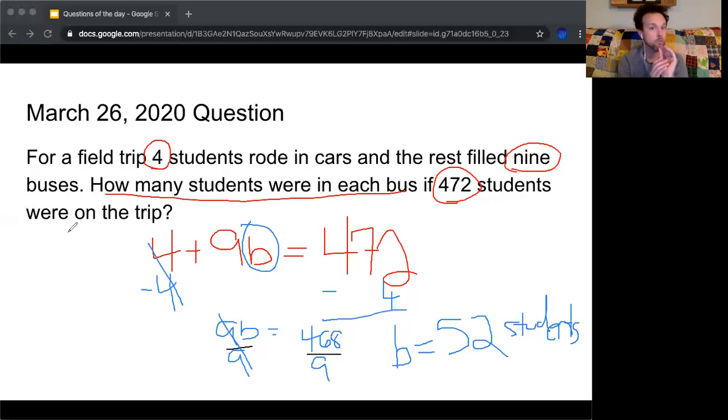It just said that those four were separate and the rest filled nine buses. So from this, from the wording of the question, we can assume that those nine buses were filled equally. And that 52 students were on each bus. 52 times nine is 468 plus four gives me 472.